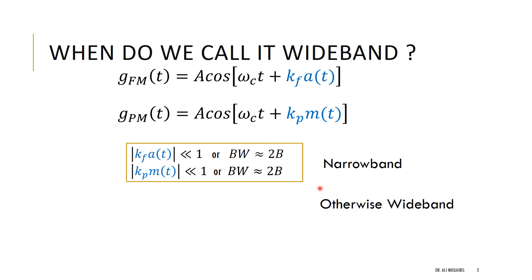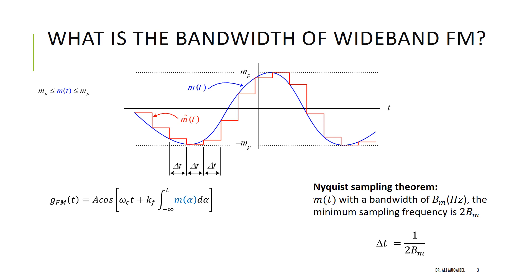For narrowband the bandwidth is 2B_m, but what is the bandwidth for the wideband case? Suppose the message is this blue signal with bandwidth B_m, bounded by peak values -M_p to M_p. Our objective is to find the bandwidth of the FM modulated signal. Unfortunately it's not easy to find this directly from the expression, so instead we approximate the message by the red signal — a staircase approximation.